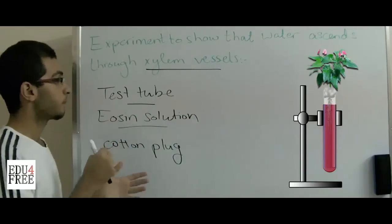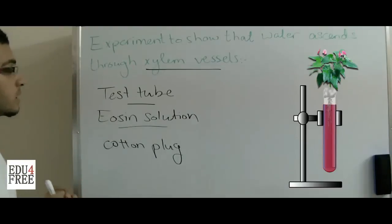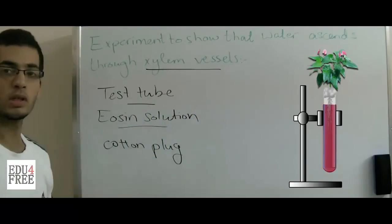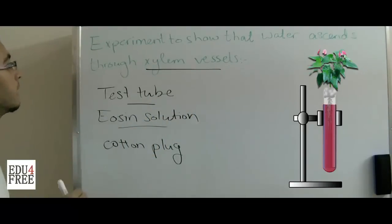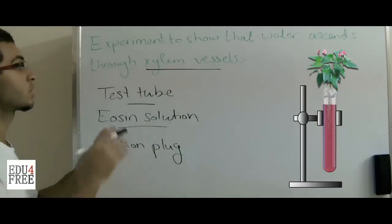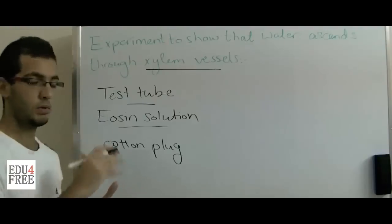So this is the conclusion of today: water ascends from the root system to the upper parts of the plant, and the xylem vessels are the vessels which transport the water from the root system to the upper parts of the plant.